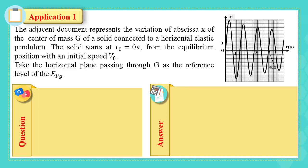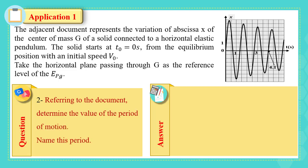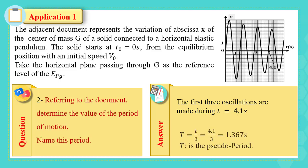Now, referring to the document, determine the value of the period of motion, and then name this period. Check this figure. The first three oscillations are made during 4.1 seconds. So, the period is this time over 3. So, 4.1 over 3 equals to 1.367 seconds. The name of this period is pseudo-period.